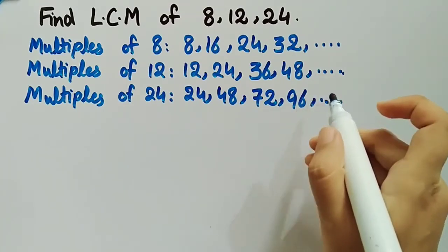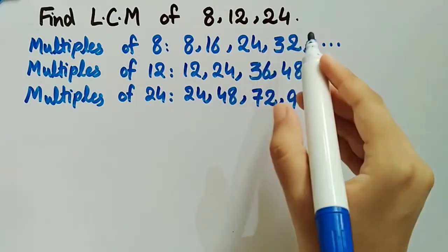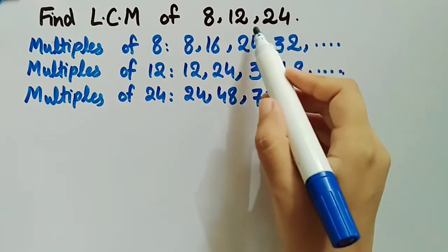Now we will see what is the smallest common multiple of 8, 12, and 24. Their smallest common multiple is 24.